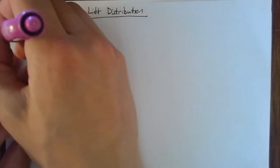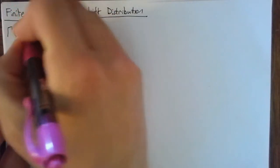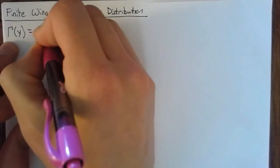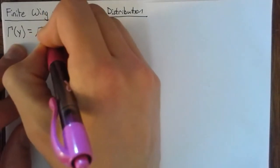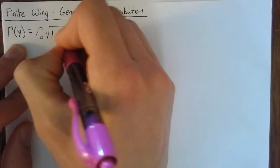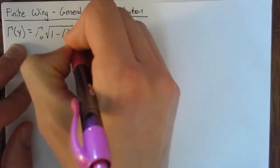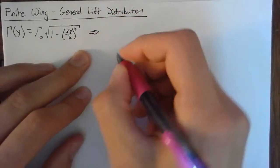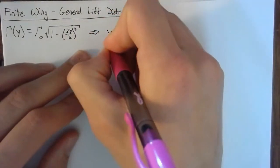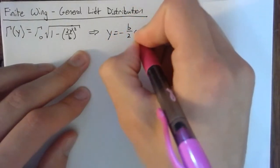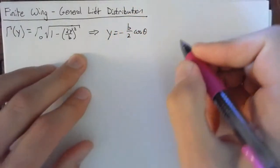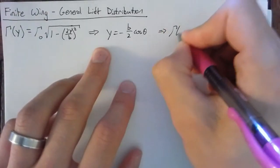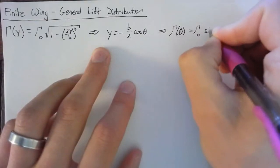To start off, let's just review what we were talking about with the elliptic lift distribution. This is just saying that our gamma is going to be a function of y, which is gamma naught times the square root of 1 minus 2y over b, all squared. And once we had this, we used a substitution of terms and said that y is equal to negative b over 2 times cosine of theta. And plugging all that in, we arrived at gamma of theta being equal to gamma naught times sine of theta.